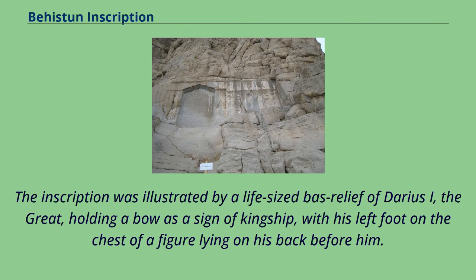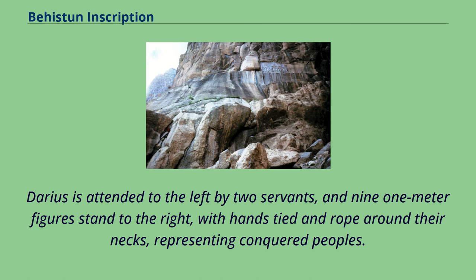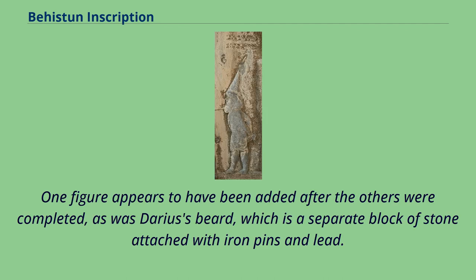The inscription was illustrated by a life-sized relief of Darius I the Great, holding a bow as a sign of kingship, with his left foot on the chest of a figure lying on his back before him. The supine figure is reputed to be the pretender Gaumata. Darius is attended to the left by two servants, and nine one-meter figures stand to the right with hands tied and rope around their necks, representing conquered peoples. A faravahar floats above, giving its blessing to the king. One figure appears to have been added after the others were completed, as was Darius's beard, which is a separate block of stone attached with iron pins and lead.